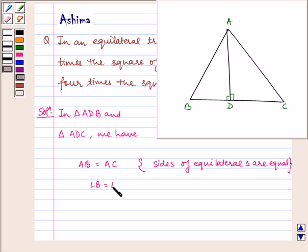Angle B is equal to angle C because each angle of an equilateral triangle is 60 degrees. And angle ADB is equal to angle ADC equal to 90 degrees.